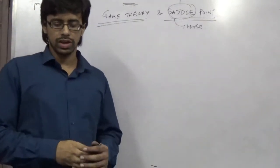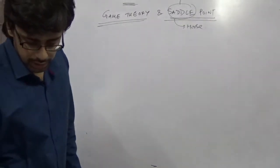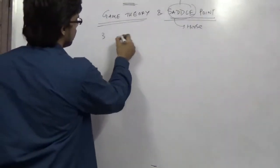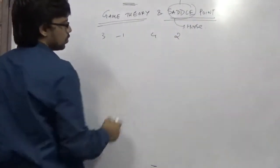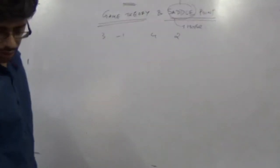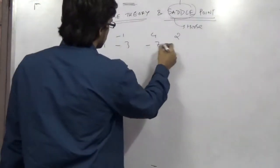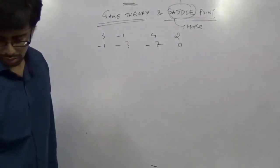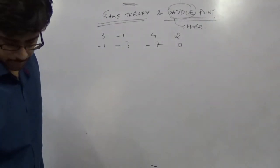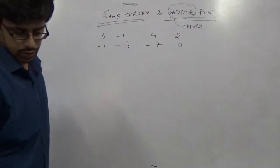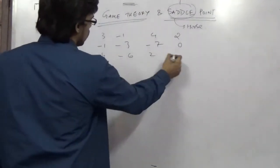So now, in the game theory, how to find the saddle point. Let me start with a game like 3, minus 1, 4, 2. Minus 1, minus 3, minus 7, 0. 4, minus 6, 2, minus 9.